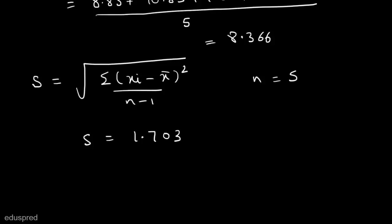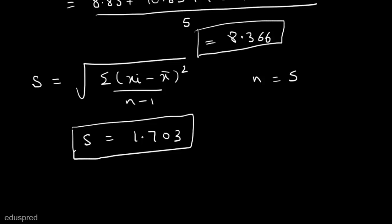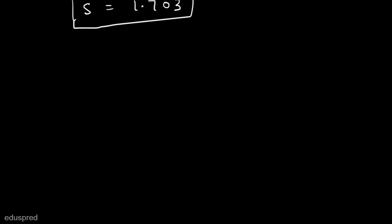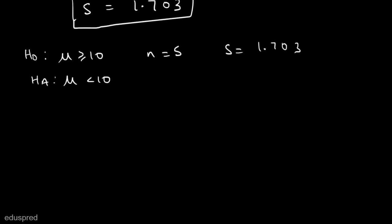So now we know the sample standard deviation is 1.703 and the sample mean is 8.366. We know we have to use the t-test to test the hypothesis. In the alternate hypothesis we have a less-than sign, which means this is a case of a left-tailed test.